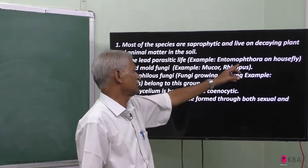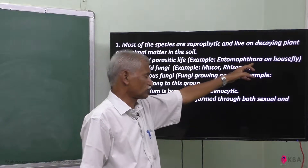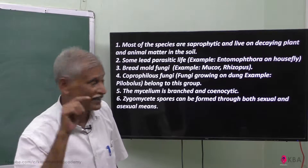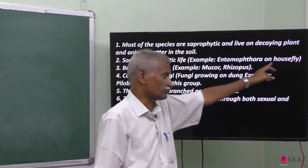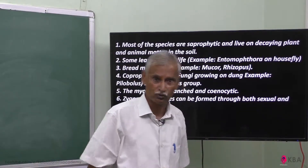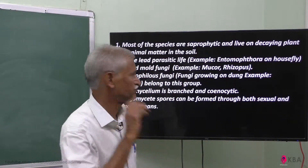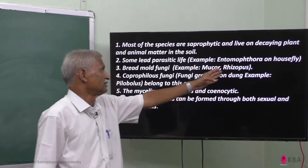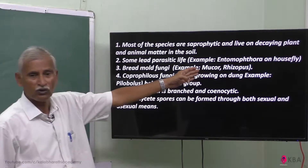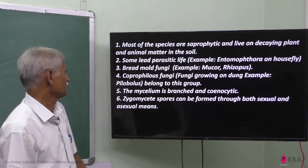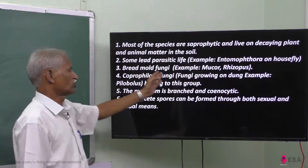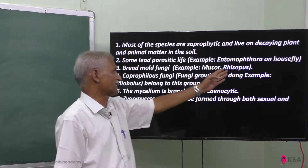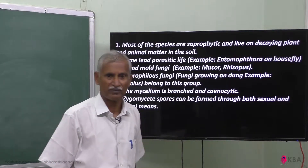An example of a parasite is Entomophthora on the house fly. Also, bread mold fungi — for example, Mucor and Rhizopus.